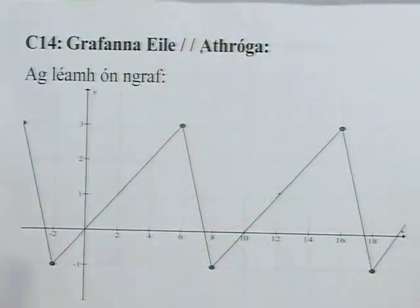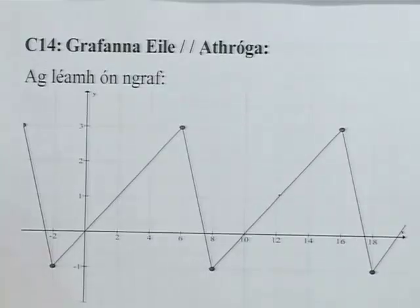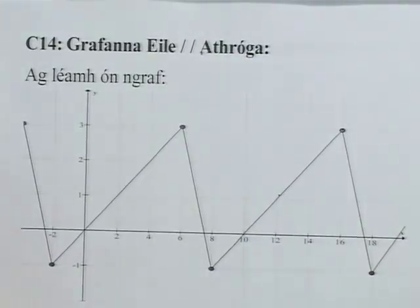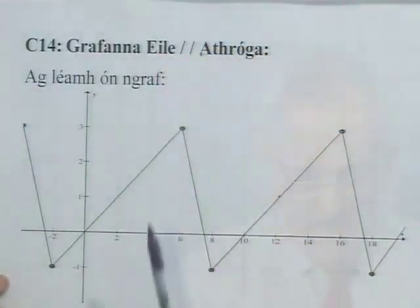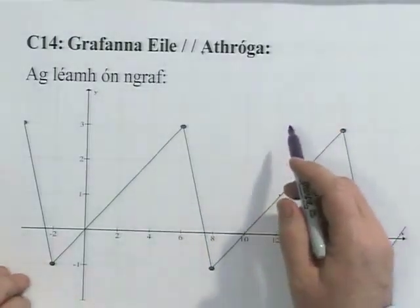The next question, C14, is about graphing with a variable. We need to read from the graph. There's a pattern to observe here. Another thing is that you're going to see it's a leaf graph, where there's a period of time.